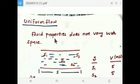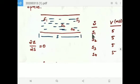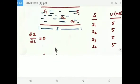What is uniform flow? It is the type of flow in which fluid properties do not vary with space — otherwise, fluid properties do not vary with position. At positions s1, s2, s3, s4: the velocity is 5 m/s at each point. Velocity does not vary with space or position, so this is called uniform flow. Mathematically: ∂z/∂s = 0, where z is the property of the fluid.